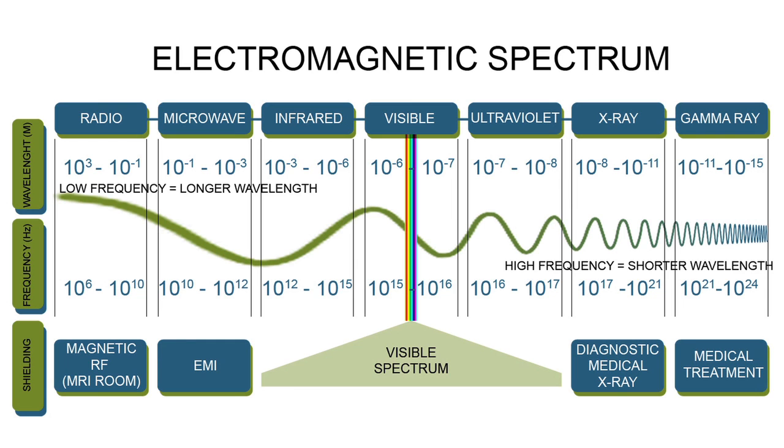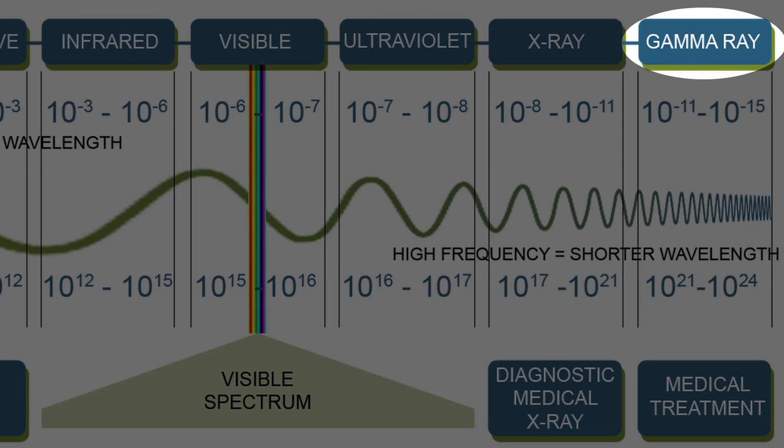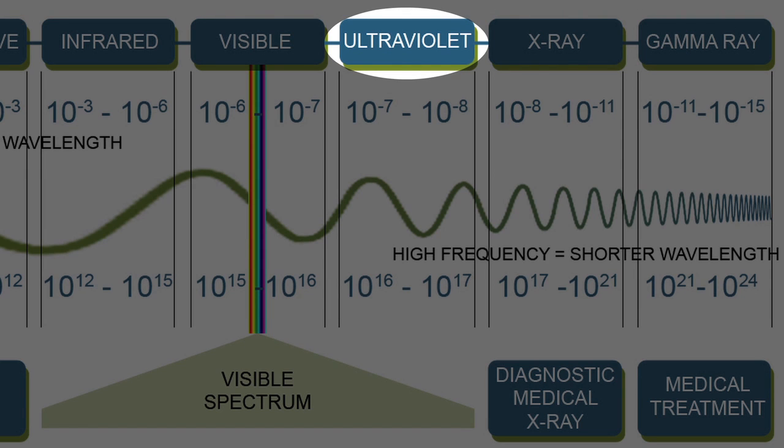What we're talking about is radiation that can damage organisms on a molecular level. This is called ionizing radiation. This is what gamma rays, x-rays, and far ultraviolet light are.